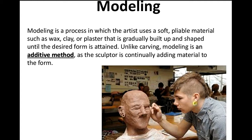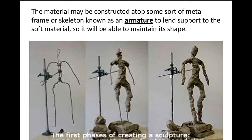Modeling is another form of sculpture. Modeling is a process in which the artist uses soft, pliable material such as wax, clay, or paste that is gradually built up and shaped until the desired form is attained. Unlike carving, modeling is an additive method — the sculptor is continually adding material to the form. The material may be constructed atop some sort of metal frame or skeleton known as armature to lend support to the soft material so it will be able to maintain its shape.